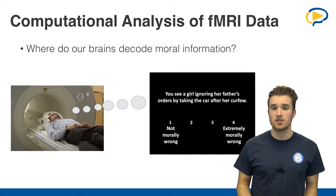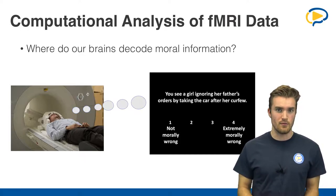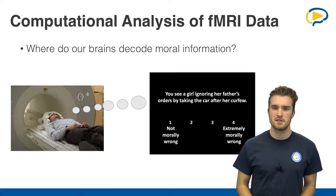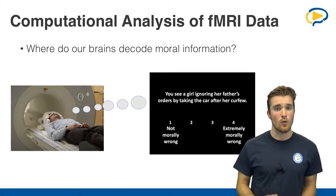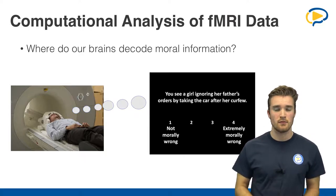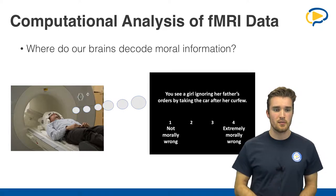I explained our procedure for how we extract moral information from text. Now let's talk about how we measure moral information presented in the brain — how moral information is decoded and encoded in our brains. To do this, as you can see on this slide, we set up an fMRI experiment in which participants, while they underwent fMRI scanning, were reading about different moral violations. For example, the participant read: 'You see a girl ignoring her father's orders by taking the car after her curfew.'